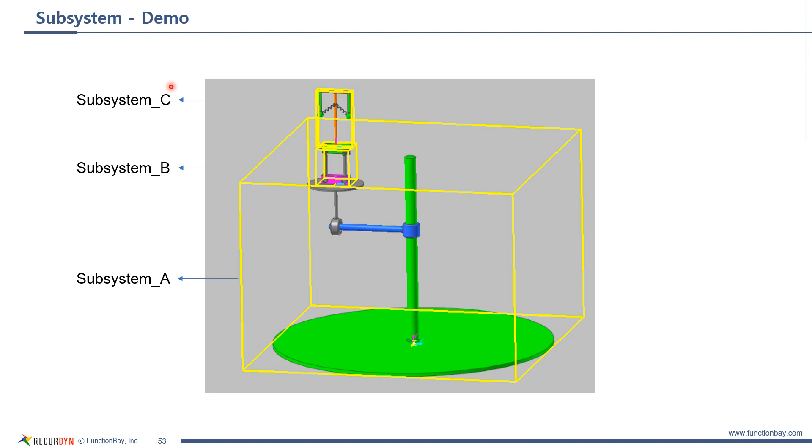This is an example model which has three subsystems. It is possible to connect the subsystems using joints and to define contact between them as well.